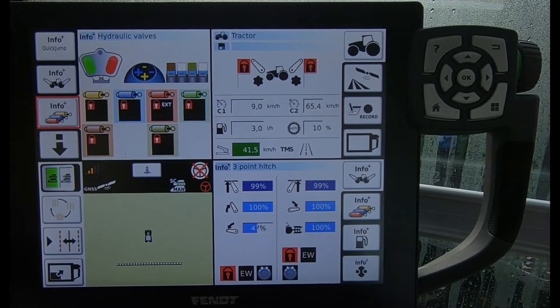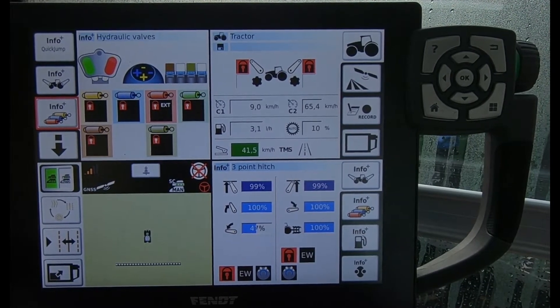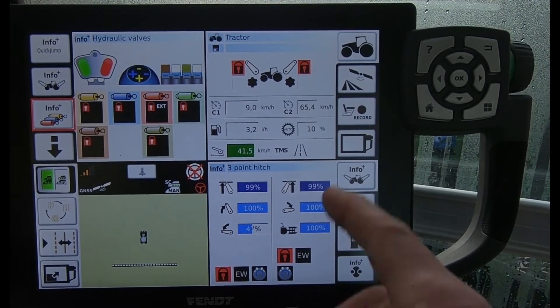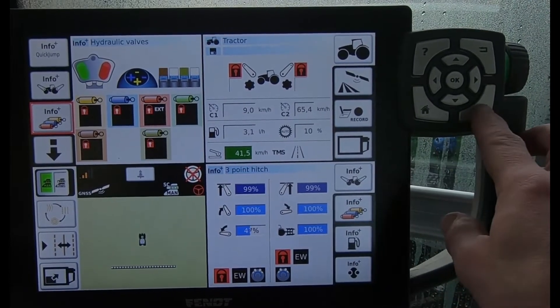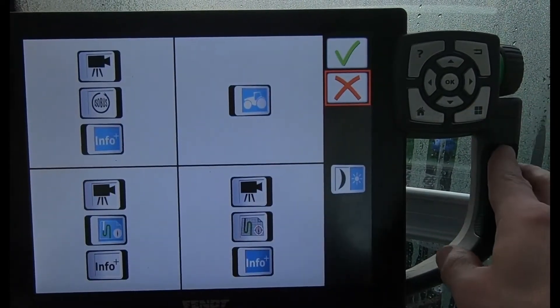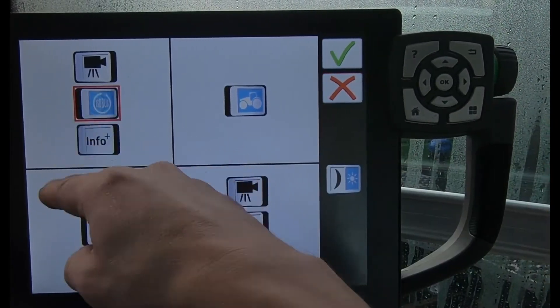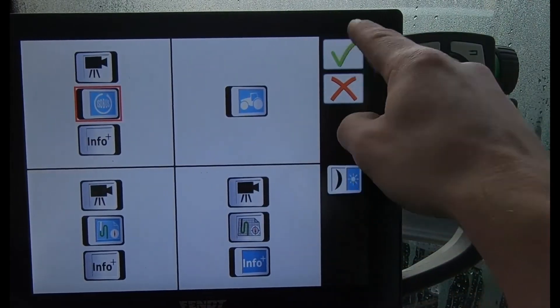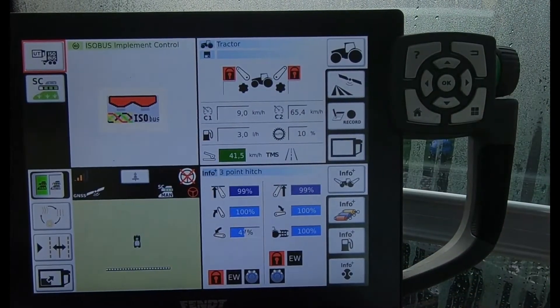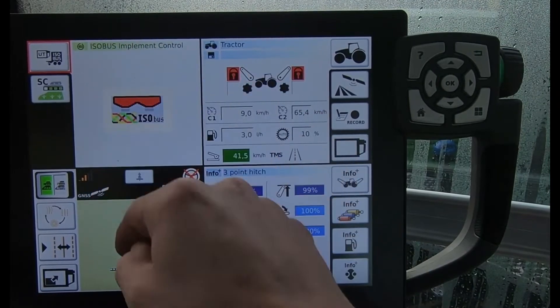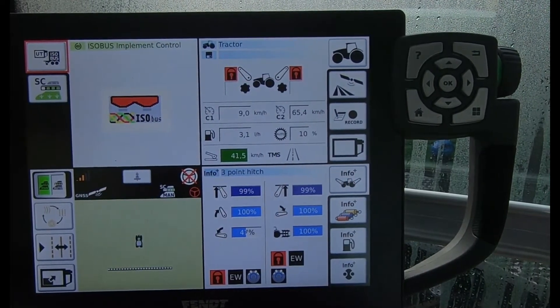When we've got an ISOBUS implement on the back of the tractor with the NT01 screen, to bring up the ISOBUS tile I want to come across, press my fall button there, and I can switch on the ISOBUS and then click OK.